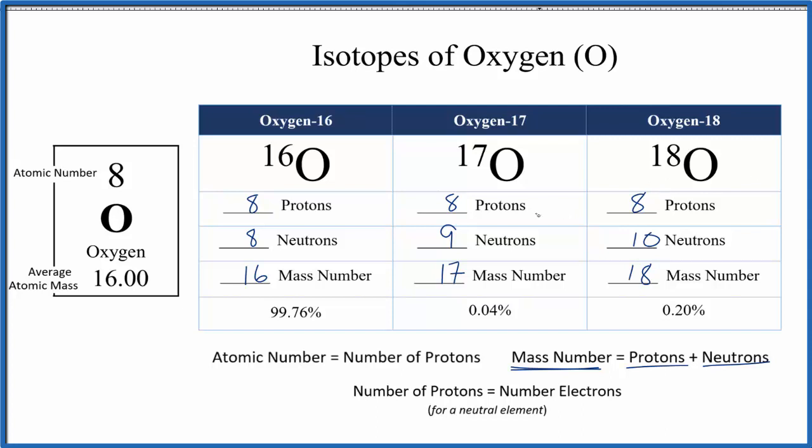So again, when we look at these isotopes, really the only thing that's going to be different about the isotope is it just has a different number of neutrons. Electrons and protons, they're the same.